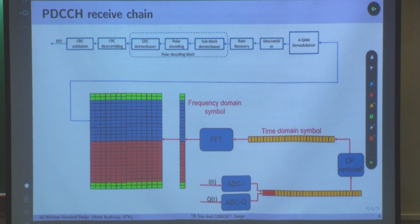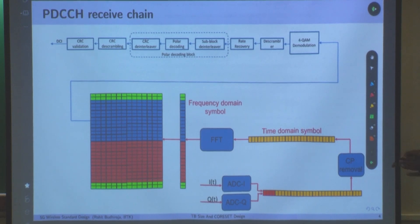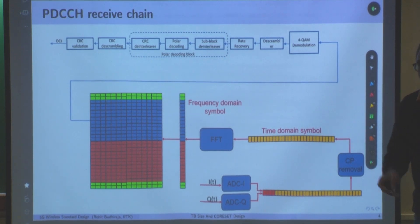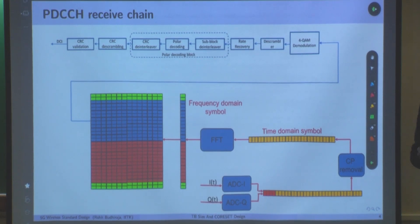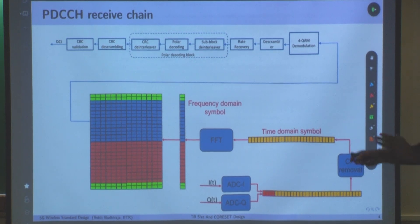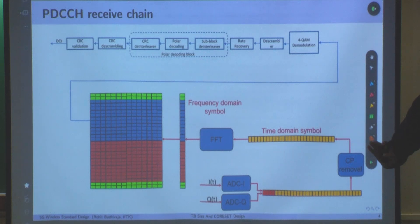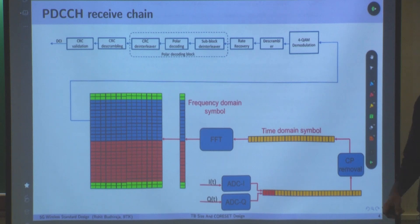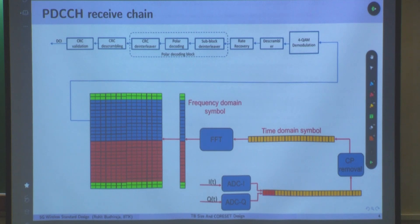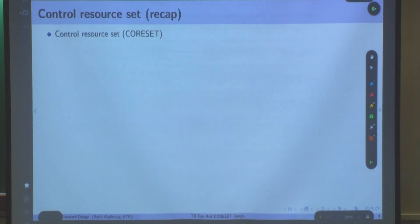PDCCH is sitting somewhere on these CORESETs — we do not know exactly where. As mentioned earlier, the user has to make these decoding attempts blindly. Get that picture clear: the user has received data and is ready, but does not know where its data is or where its PDCCH is. How does decoding happen? That is what we are going to learn here.